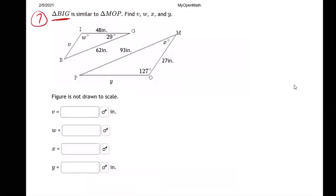They tell us triangle BIG is similar to triangle MOP and they want us to find a whole bunch of things. So what you should for sure do is flip triangle BIG around.